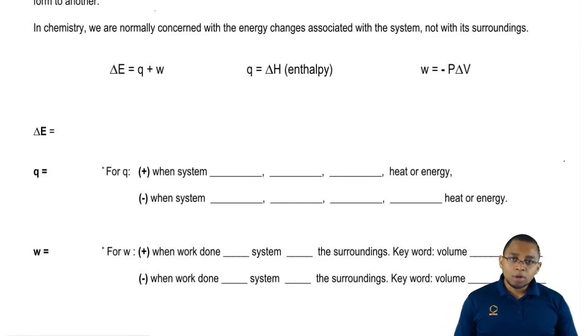But now we're going to pay more attention to the surroundings. In chemistry, we are normally concerned with just the surroundings and we're going to use this equation here: Delta E equals Q plus W. Delta E represents the internal energy of our system.